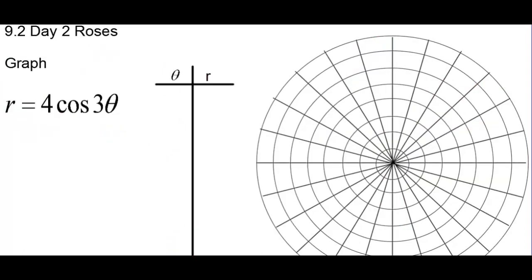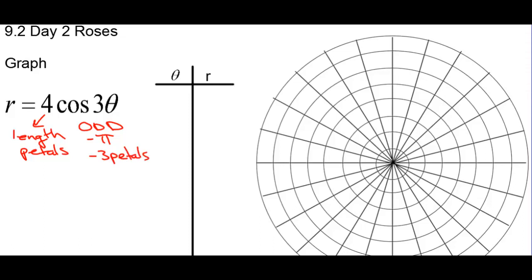Let's look at r equals 4 cosine of 3 theta. That's the length again — length of the petals will be 4. With odd, this is an odd coefficient of theta. This is going to finish in pi, and we will have 3 petals. In other words, we don't double this one — it will have 3 petals. And we're going to count by pi over 6.